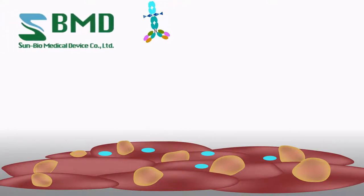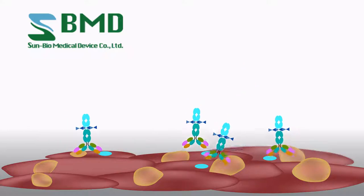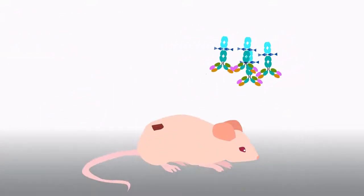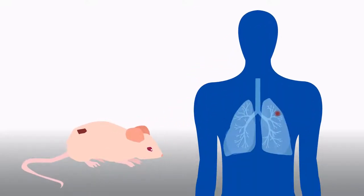Researchers from Sun Biomedical Device Company have designed a new drug that delivers a one-two punch to lung cancer cells. Shown to be potent against human tumor cells grafted onto nude mice, the drug is a promising candidate for treating lung cancer in humans.